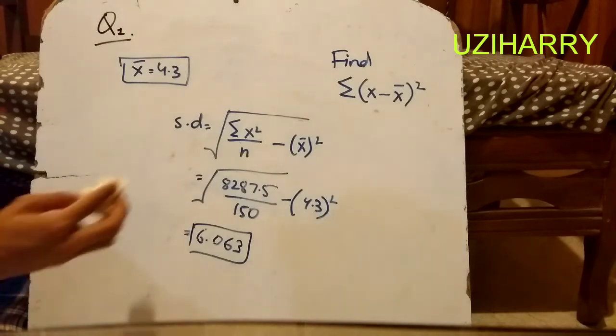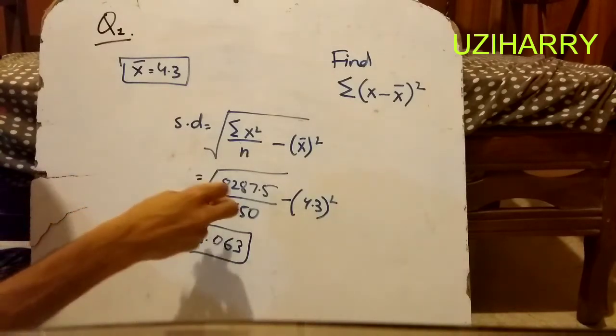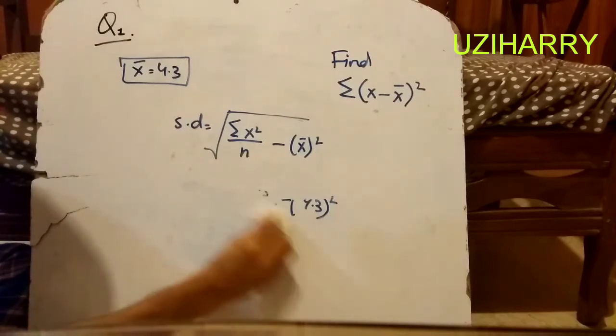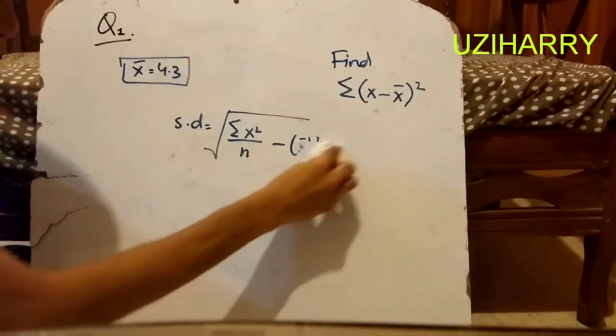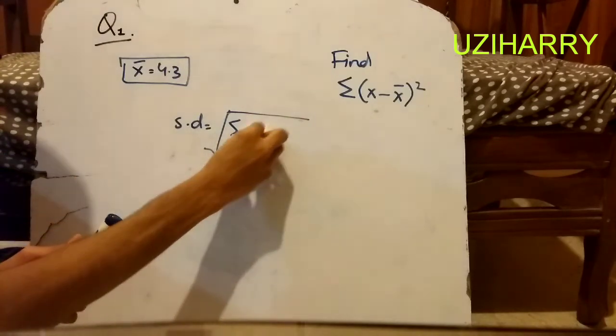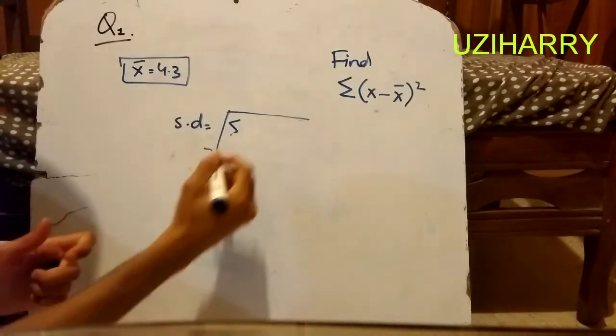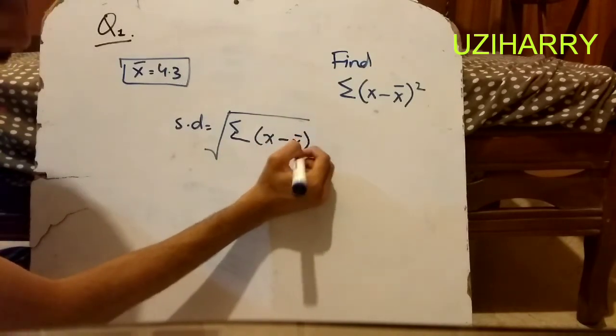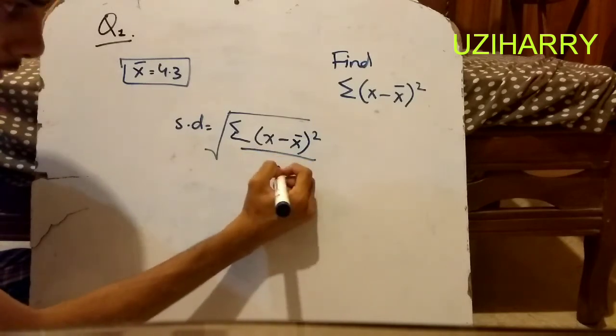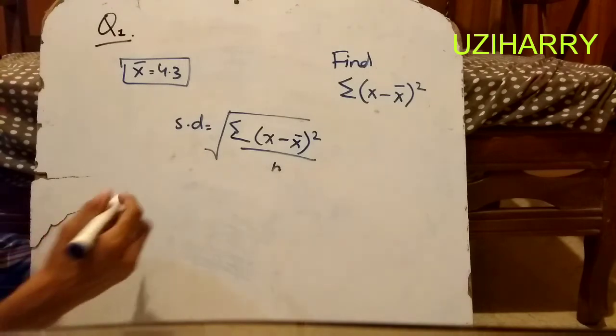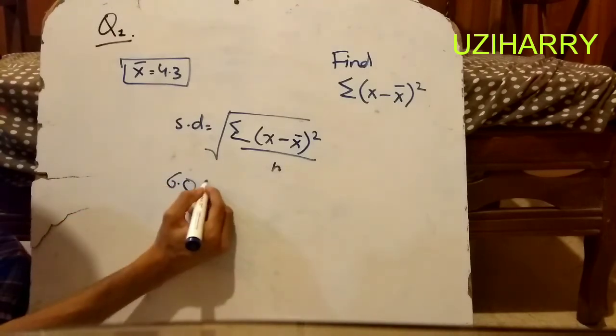Now we are applying the standard deviation formula, but now this time we are going to find the same for the actual asking of the question, that is summation of (x minus mean) square upon n. We can change the formula. Now we have the standard deviation here, 6.063. This value is unknown for us, which we have to find it.